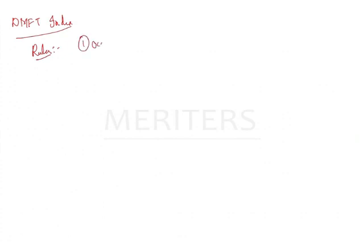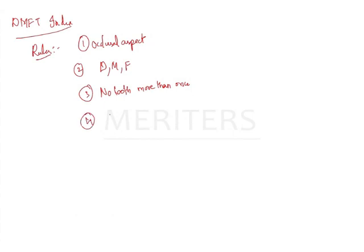Rule number 1: a tooth is considered erupted only when you see the occlusal surface or incisal edges exposed. Then you have to note decayed, missed, and filled separately. Third rule: no tooth should be counted more than once. And teeth lost or filled due to causes other than caries are not included — only caries teeth should be included.